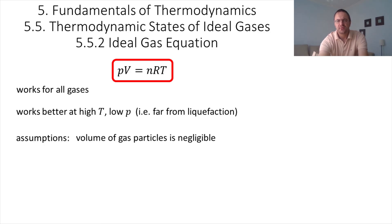The model to derive PV equal to nRT makes two key assumptions. First, the volume of the gas particles is negligible. That means the atoms or the molecules of the gas are considered as point-like. And second, the interactions between particles are negligible. That means that the atoms or the molecules don't see each other and they behave as if they were alone.